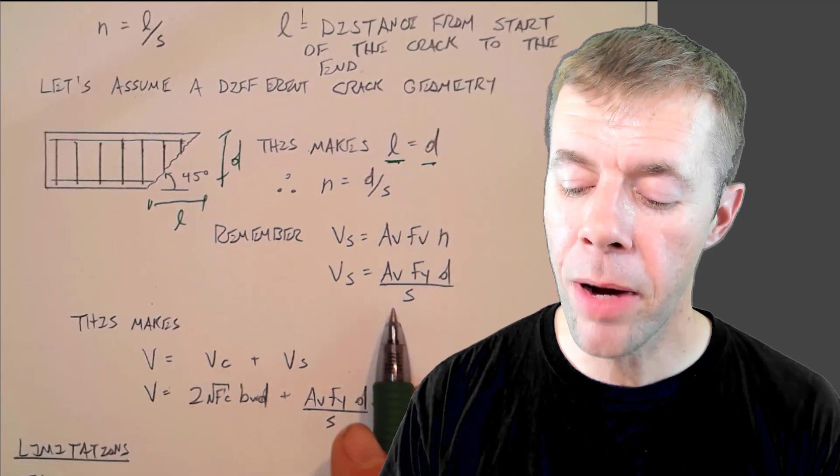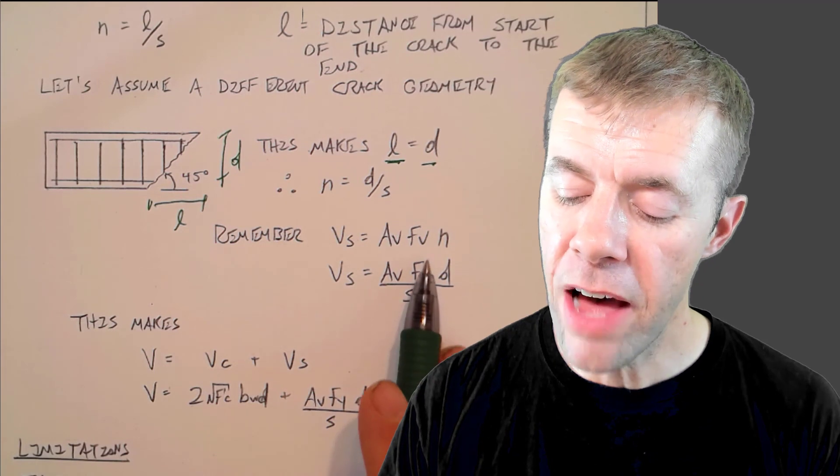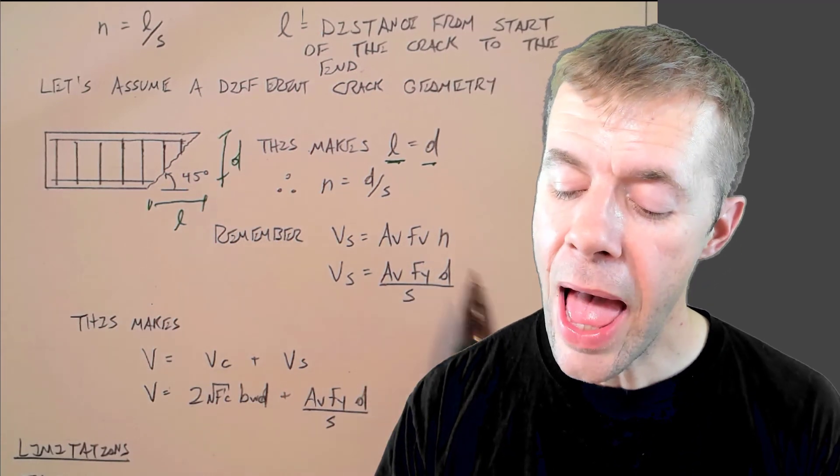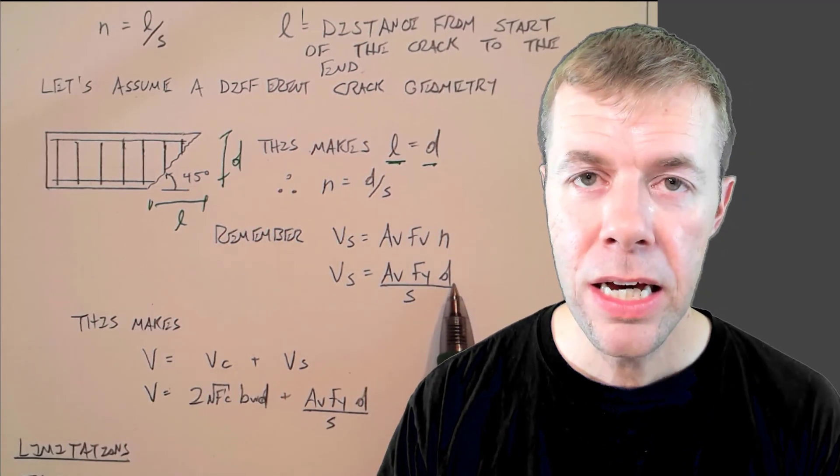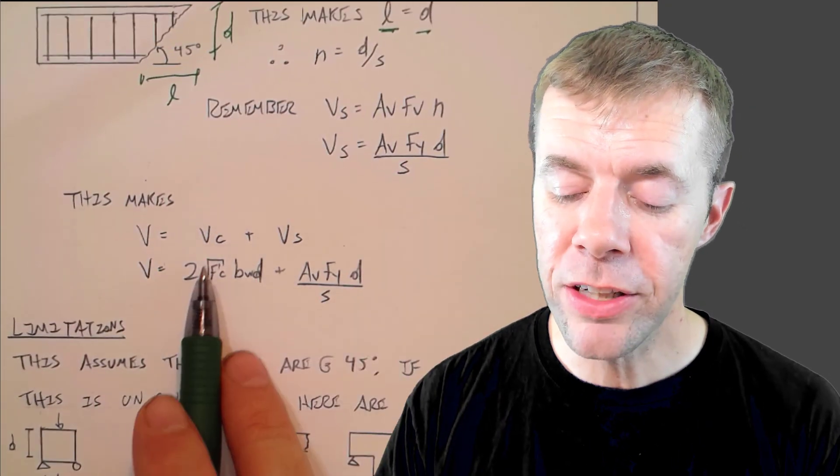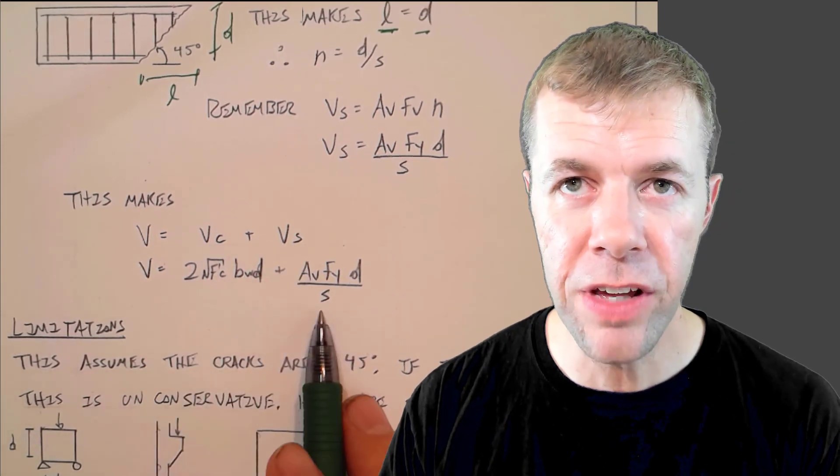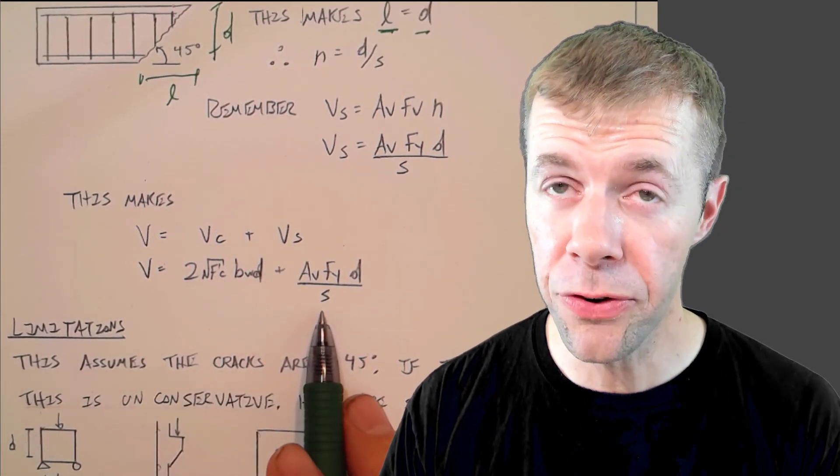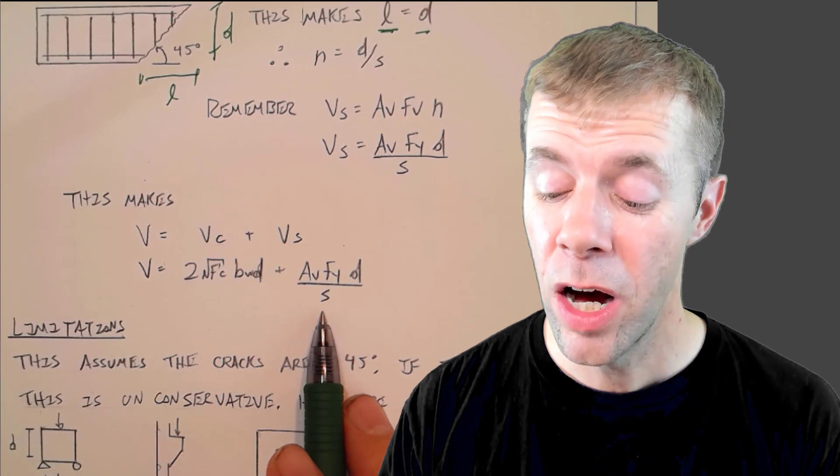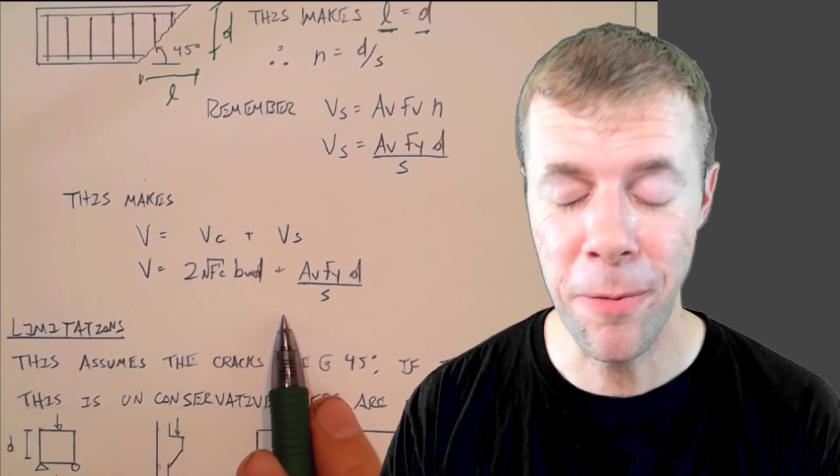Therefore, if I plug in everything, I get my equation. I take AV. I've already told you how to find that. I have FV. That's FY. And N would now be D divided by S. So I plug in here, and now I know my V sub C, 2 root F prime C, BWD. I know my V sub S, AV, FY, D over S. And I have my capacity in shear of my reinforced concrete beam.